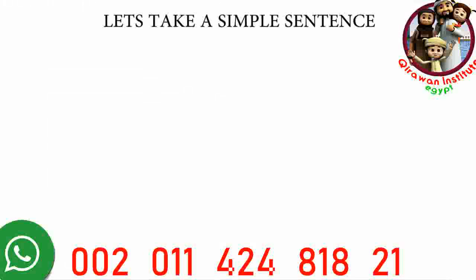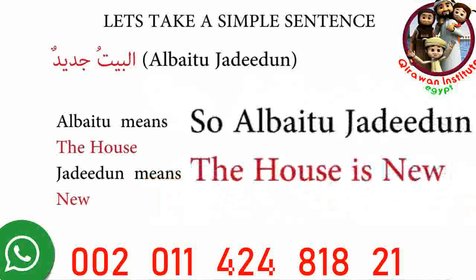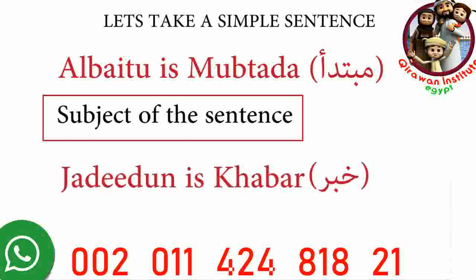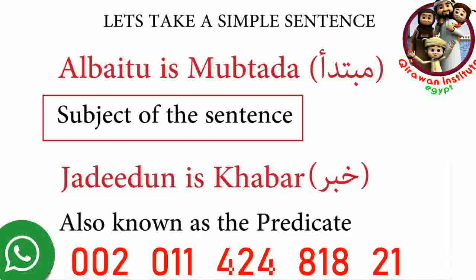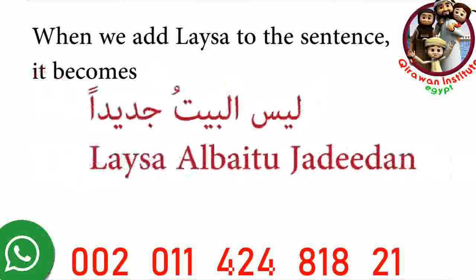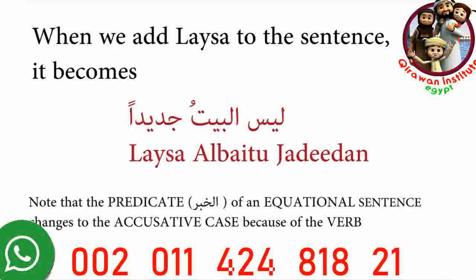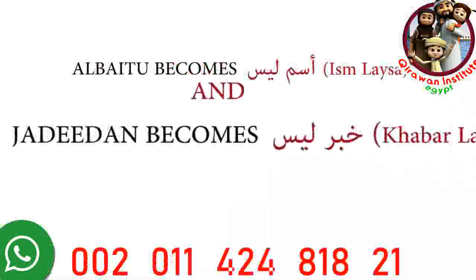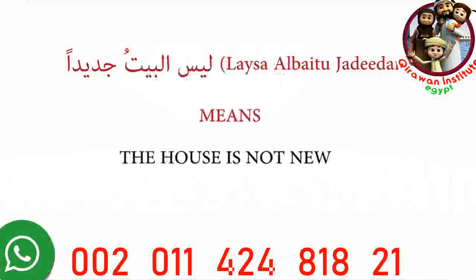Let's take a simple sentence: al-betu jadidun. Al-betu means 'the house,' jadidun means 'new,' so 'the house is new.' Al-betu is muktada, or the subject of the sentence, and jadidun is khabar, or information about the subject, also known as the predicate. When we add leysa to the sentence, it becomes leysa al-betu jadidun. Note that the predicate, al-khabar, changes to the accusative case because of the verb leysa. Al-betu becomes isam leysa and jadidun becomes khabar leysa. Leysa al-betu jadidun means 'the house is not new.'